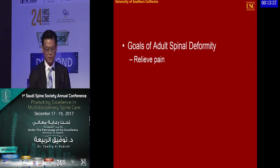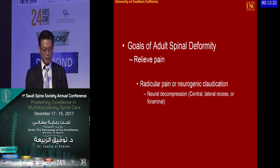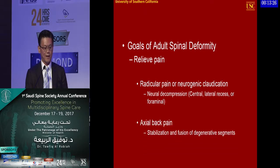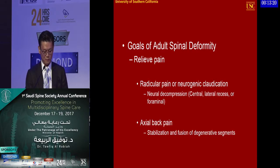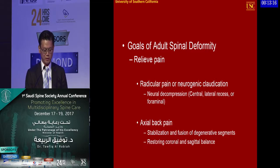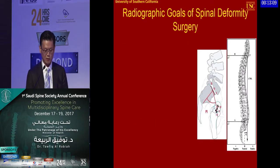Predominantly what we're trying to address is the pain. We generally do very well in relieving radicular pain or neurogenic claudication from stenosis and compression. Axial back pain is also very effectively treated when we identify areas of deformity and instability. Restoring sagittal and coronal balance significantly improves patient outcomes in terms of pain relief.